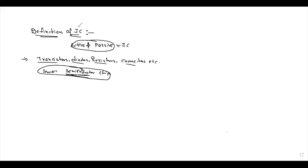If we have electronics equipment, the materials used for IC manufacturing are silicon and germanium. Silicon and germanium are the common materials used in IC manufacturing.